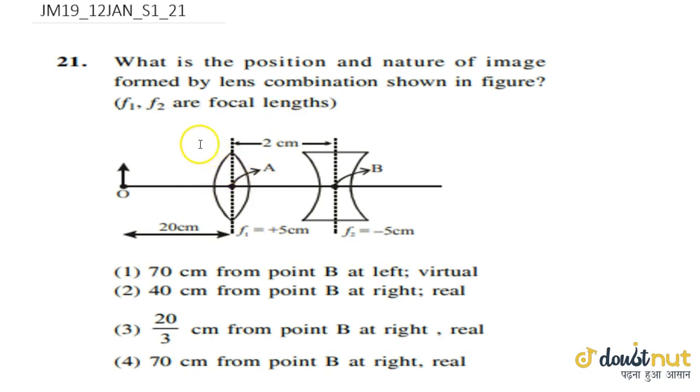So there are two lenses. Let us say this is lens number 1 and we name it as L1, and this is lens number 2, we name it as L2. Separation between the center of these two lenses is 2 cm. Focal length of lens 1 is 5 cm as it is given positive. Convex lens is positive and concave lens focal length is negative. So here is already given 5 cm and minus 5 cm.